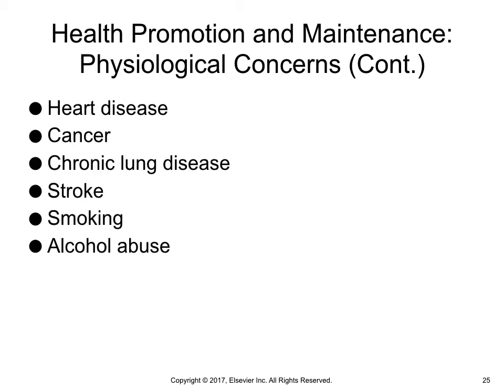Heart disease is the leading cause of death in older adults, followed by cancer, chronic lung disease, and stroke. Common cardiovascular disorders are hypertension and coronary artery disease. Nursing interventions for hypertension and coronary artery disease address weight reduction, exercise, dietary changes, limiting salt and fat intake, stress management, and smoking cessation. Patient teaching also includes information about medication management, blood pressure monitoring, and the symptoms indicating the need for emergency care. Malignant neoplasms are the second most common cause of death among older adults. Nurses educate older adults about early detection, treatment, and cancer risk factors.